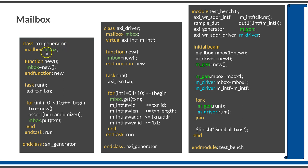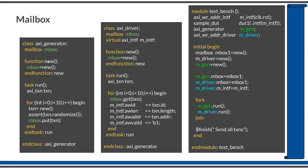In the first class, named axi_generator, the mailbox is declared as a member variable with the name mbox. As you know, a class has a constructor named new — it's a required function in every SystemVerilog class, called when the class is created. Inside the new function, the mailbox's own new function is called, so the mbox object is created and its handle is returned within the class constructor.